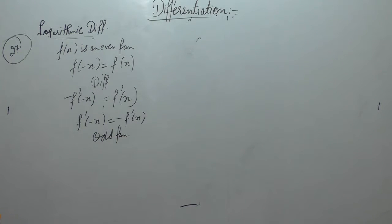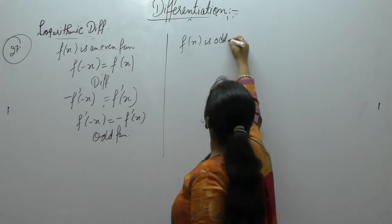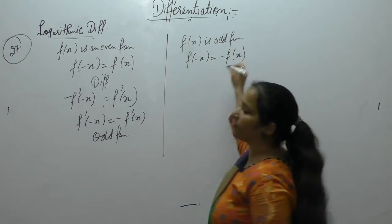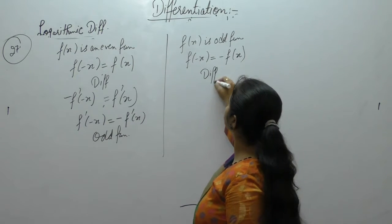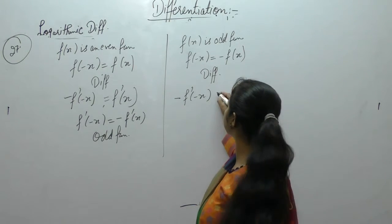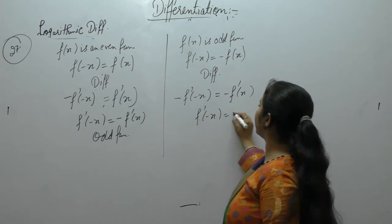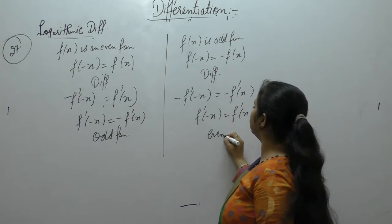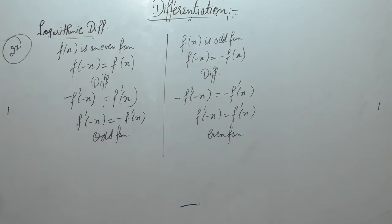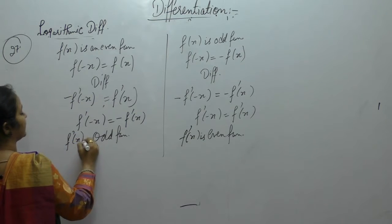Now if f(x) is an odd function, odd function means f(-x) = -f(x). Differentiate it: f'(-x)·(-1) = -f'(x). The minus signs cancel, so f'(-x) = f'(x). This is an even function. So f'(x) is an even function in this case, and f'(x) is an odd function in the previous case.